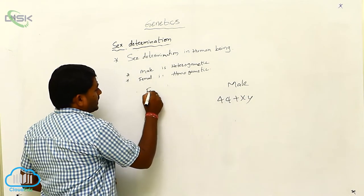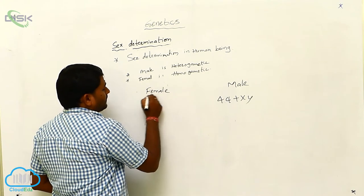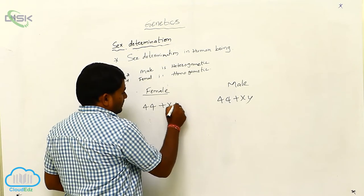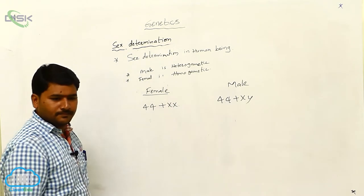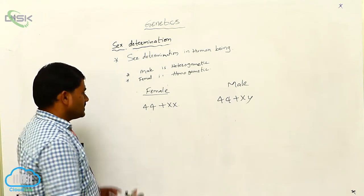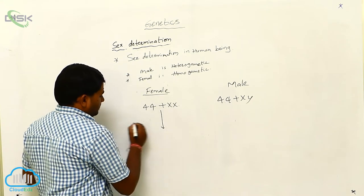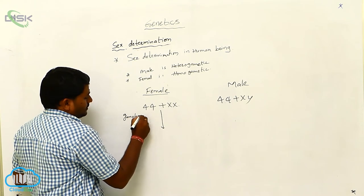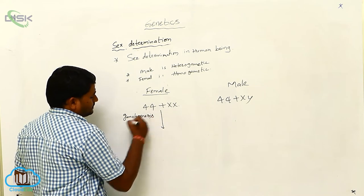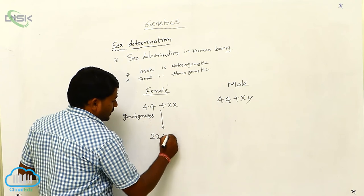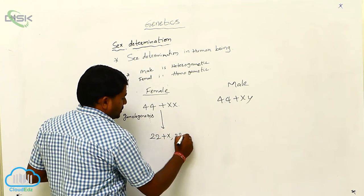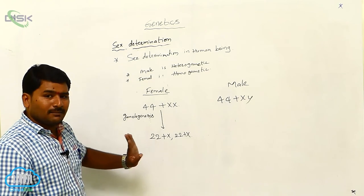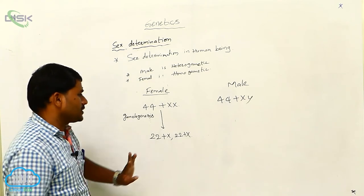If you take the female human being, she also has 44 autosomes, but the sex chromosomes are the same. During gametogenesis, all ova will be 22 plus X and 22 plus X — so all ova are the same type, making the female homogametic.